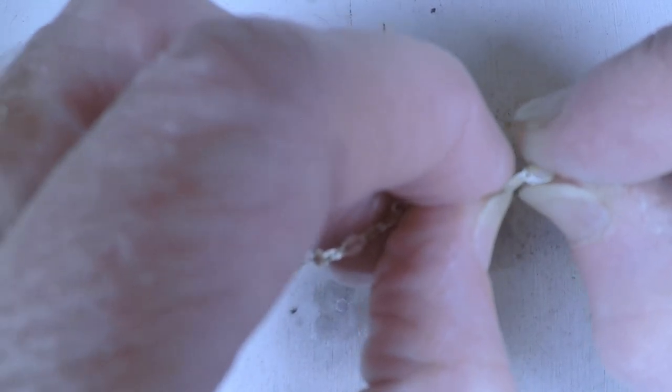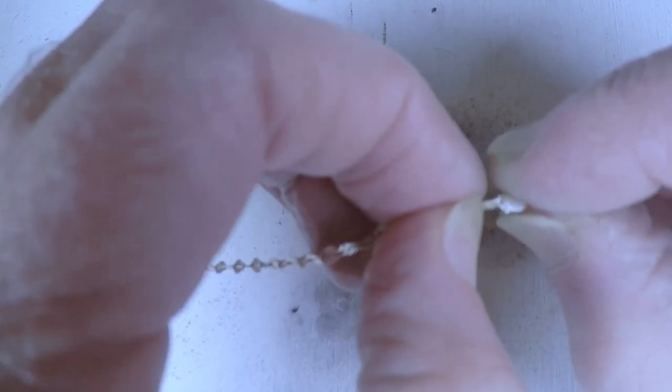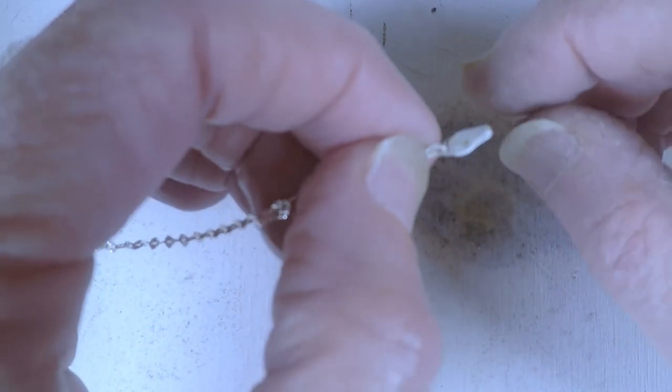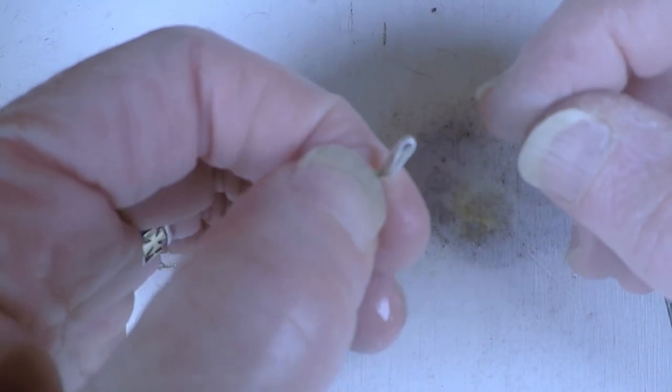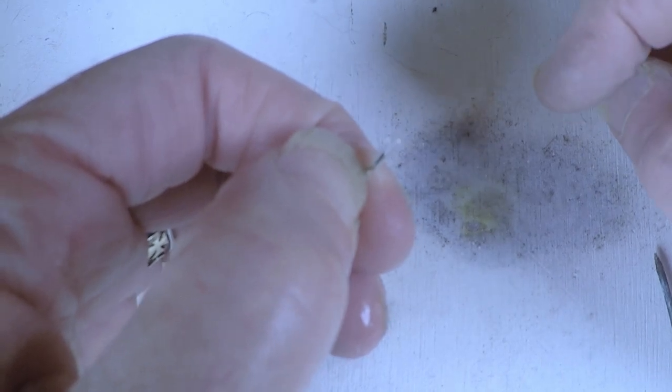It's starting to loosen up now. You just want to be really careful it didn't flow onto it. That way your chain's not stiff. And that's how you solder an end tab onto a sequin. Thanks for coming.